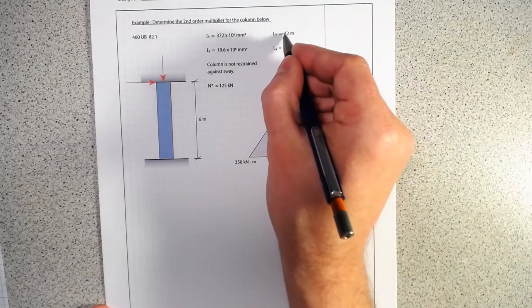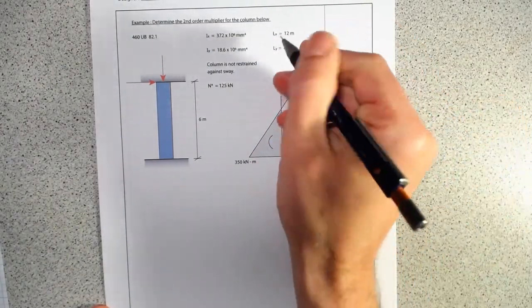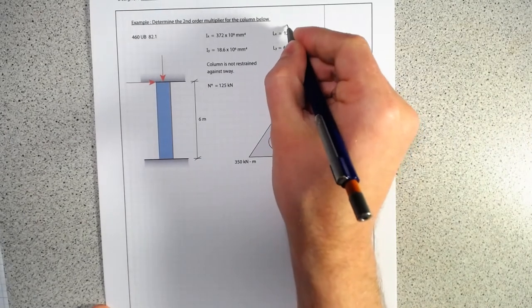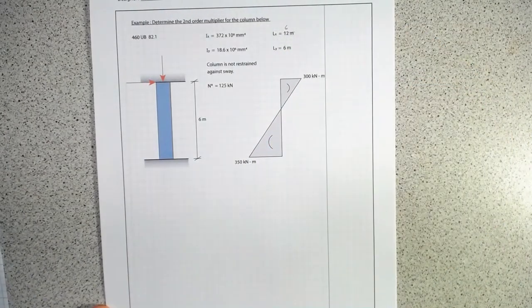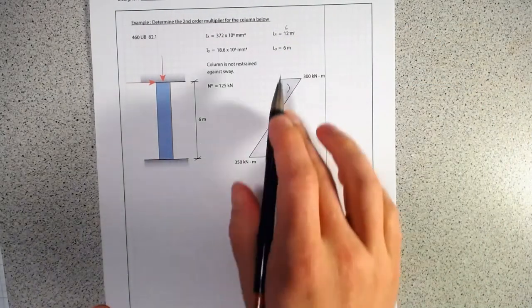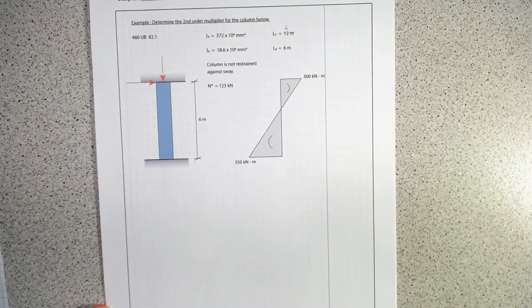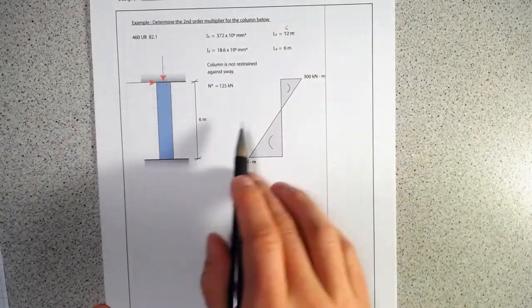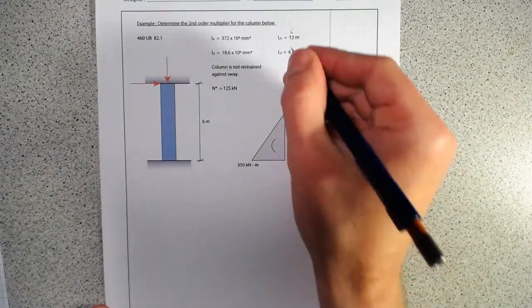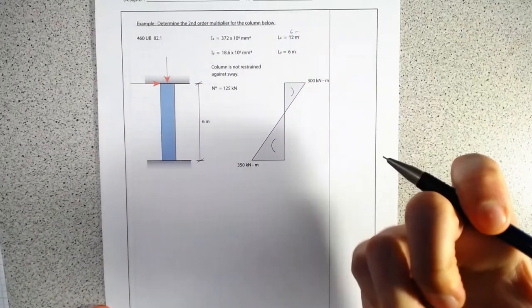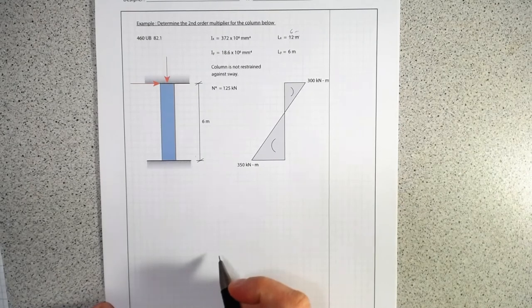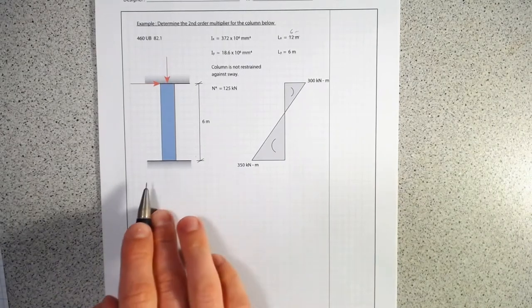Oh, sorry. That's a mistake actually. That shouldn't be 12, that should be 6. So they're both about both axes, we've got a 6 meter distance. There we go, 6 meters. Very good.